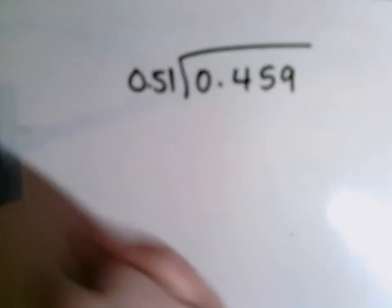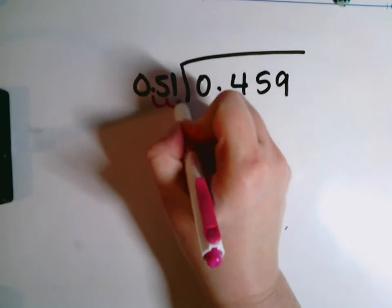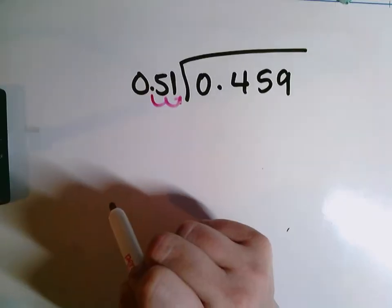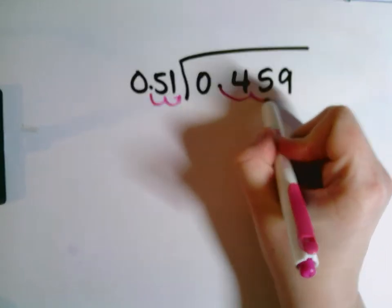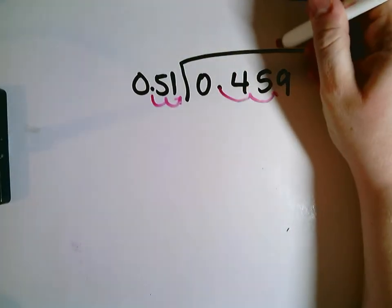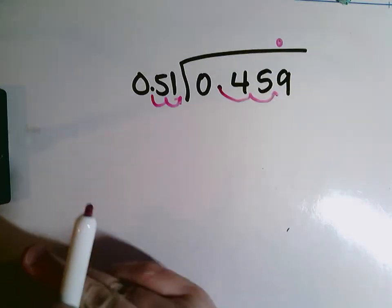I see that I have a decimal in my divisor, so I need to move it over. And here I'm moving it over two jumps because it takes two jumps to get to the end of my number. I'm going to move it over two jumps here. So my decimal point is going to go in between the five and the nine now.